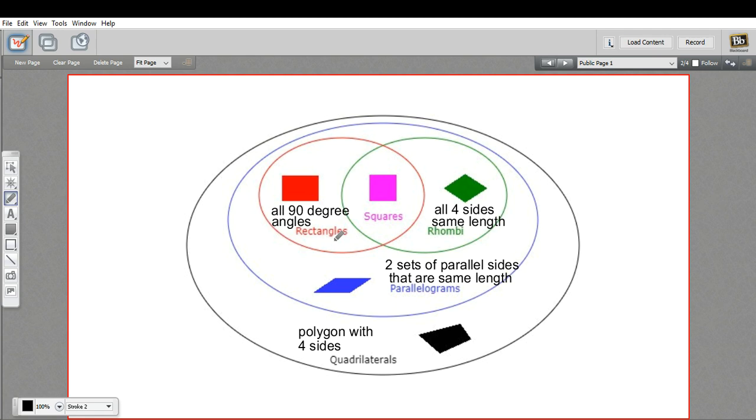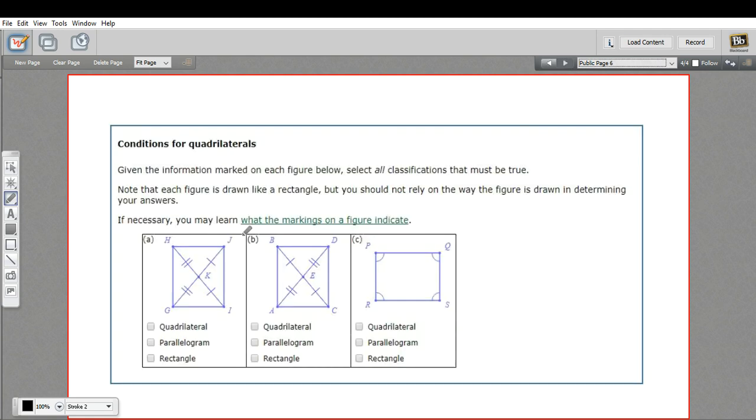And then, of course, a rectangle, which is a type of parallelogram, so it has all those properties, also has all 90-degree angles. So let's take a look now and see if we can make some decisions.